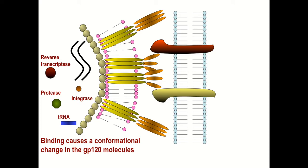The GP120 is largely going to fall off. That allows for the insertion of GP41, or at least a portion of it, not only within the lipid bilayer of the viral envelope, but within the lipid bilayer of the host cell. This slide shows the contents inside the virus that are about to gain access to the host cell.